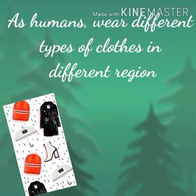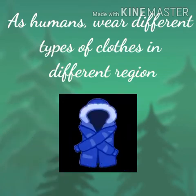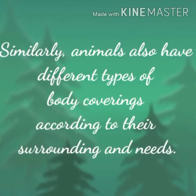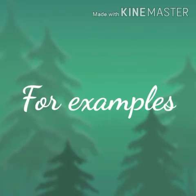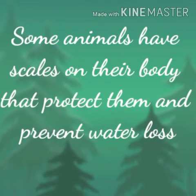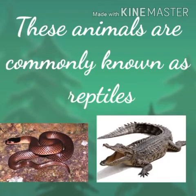The last topic of this chapter is different types of body coverings. Just as different humans living in different regions wear different types of clothes, animals also have different types of body coverings according to their surroundings and needs. For example, birds have feathers to help them fly and stay warm. Some animals have scales on their body that protect them and prevent water loss — these animals are commonly known as reptiles.